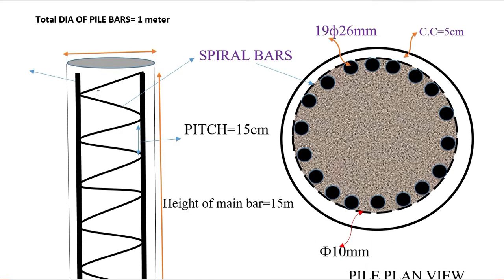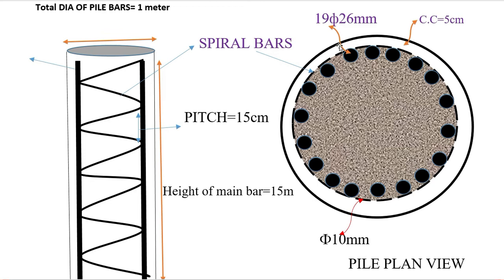The pile has spiral rings. The total diameter of the pile is 1 meter. In the plan view (section view), you can see the longitudinal or main bars of diameter 26 millimeter. The total number of main bars is 19, and the concrete cover provided in this circular pile is 5 centimeter throughout the circle.